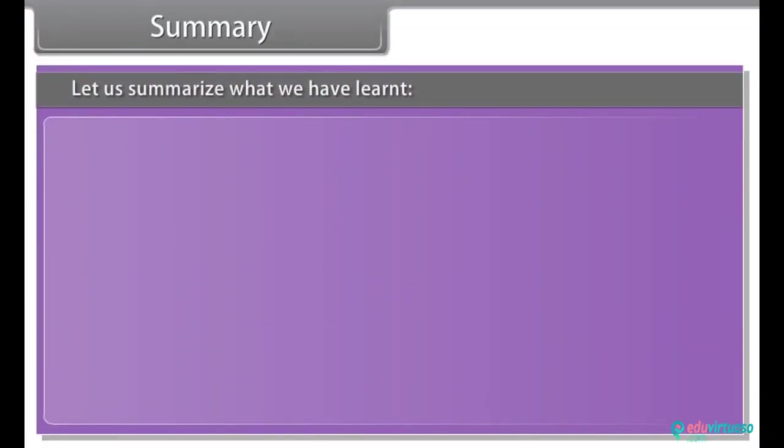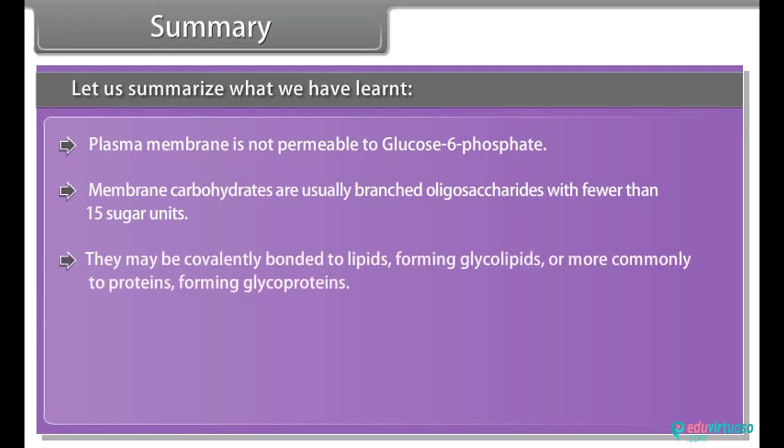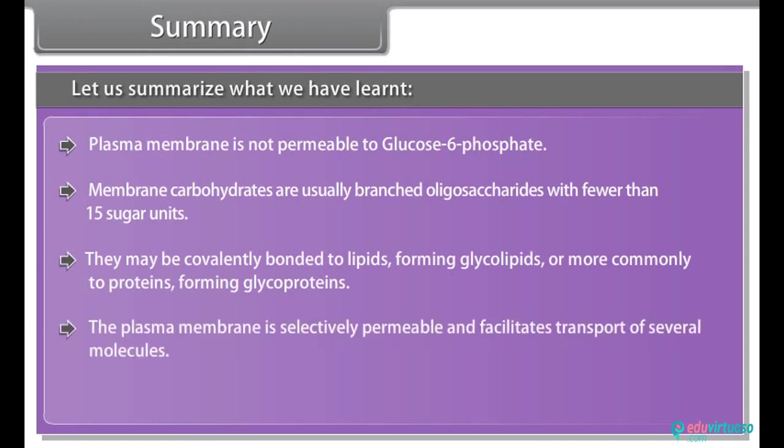Summary: Plasma membrane is not permeable to glucose 6-phosphate. Membrane carbohydrates are usually branched oligosaccharides with fewer than 15 sugar units. They may be covalently bonded to lipids forming glycolipids or more commonly to proteins forming glycoproteins. The plasma membrane is selectively permeable and facilitates transport of several molecules.